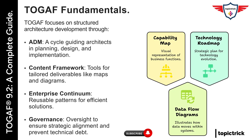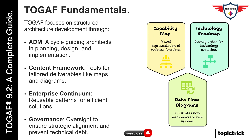Another key component of TOGAF is the content framework. This defines the types of deliverables, artifacts, and building blocks that should be created during an architecture project. For example, you might produce a business capability map, data flow diagrams, or a technology roadmap. TOGAF doesn't force you to follow one format — it gives you a toolkit that you can tailor to your organization's needs.